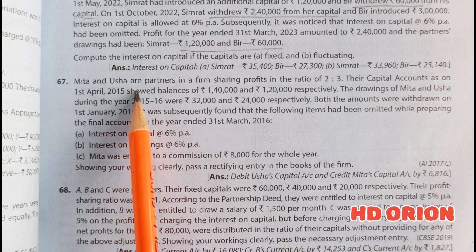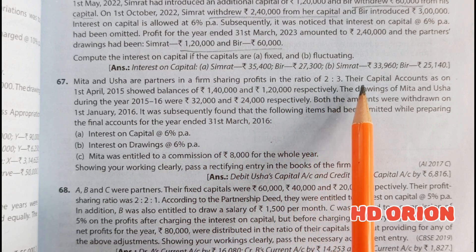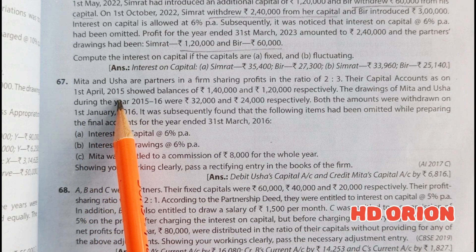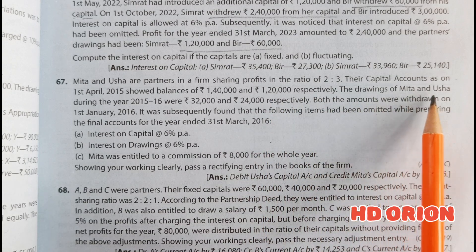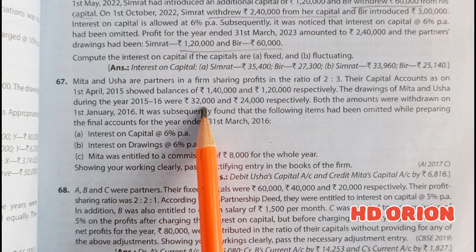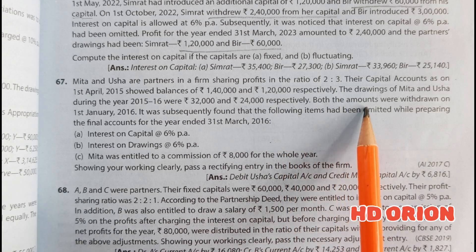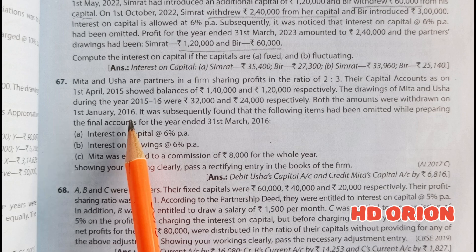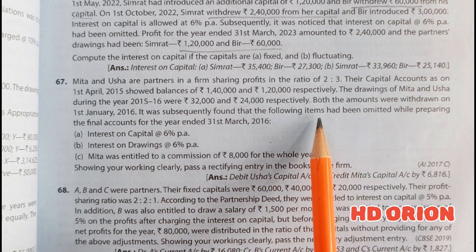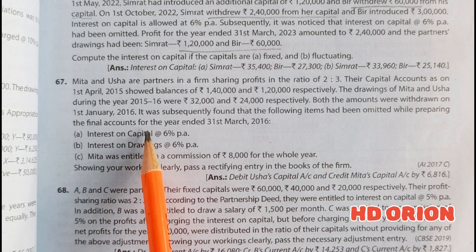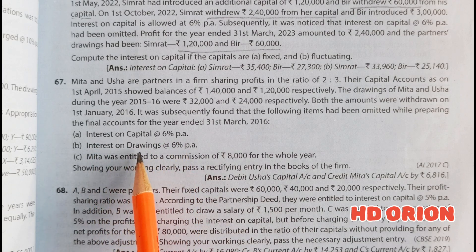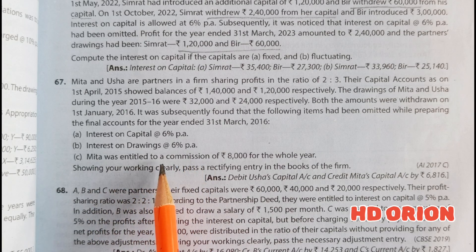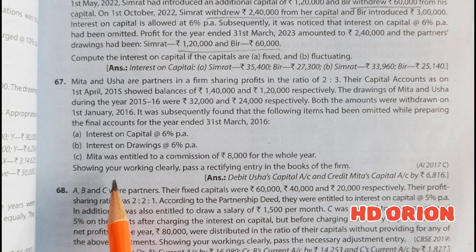Q67. Mita and Usha are partners in a firm sharing profits in the ratio of 2 to 3. Their capital accounts as on 1st April 2015 showed balances of Rs. 1,40,000 and Rs. 1,20,000 respectively. The drawings of Mita and Usha during the year 2015-16 were Rs. 32,000 and Rs. 24,000 respectively, both withdrawn on 1st January 2016. It was subsequently found that the following items had been omitted while preparing the final accounts for the year ended 31st March 2016: interest on capital at 6% per annum, interest on drawings at 6% per annum, and Mita was entitled to a commission of Rs. 8,000 for the whole year. Pass a rectifying entry in the books of the firm.